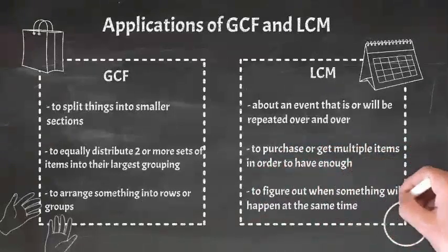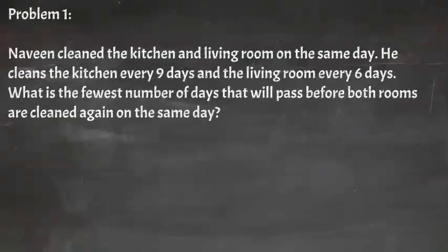Let's try some examples. Problem 1. Naveen cleaned the kitchen and living room on the same day. He cleans the kitchen every 9 days and the living room every 6 days. What is the fewest number of days that will pass before both rooms are cleaned again on the same day?